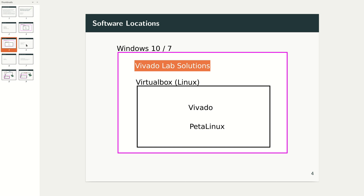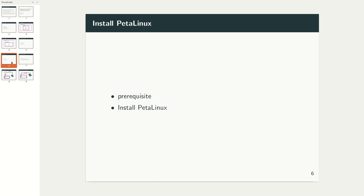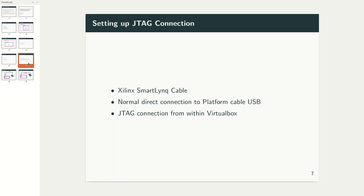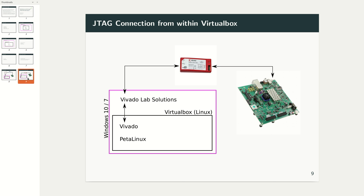What I'm going to show you in this video: a very quick introduction to key Linux commands and key principles for Linux if you don't know them. Then I go through the installation process for Vivado and briefly show you how to set up the license. I will also install PetaLinux under Ubuntu, talk about the Xilinx SmartLynq cable, and show you how you can have JTAG connectivity to the ZCU102 board from within your VirtualBox.